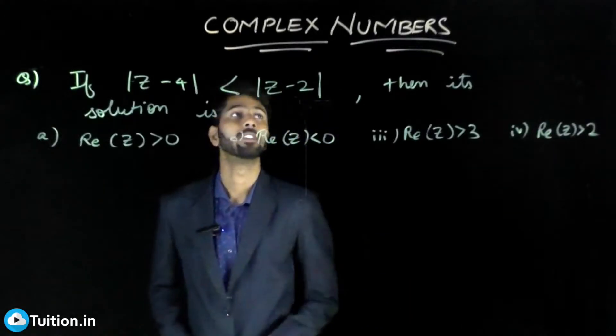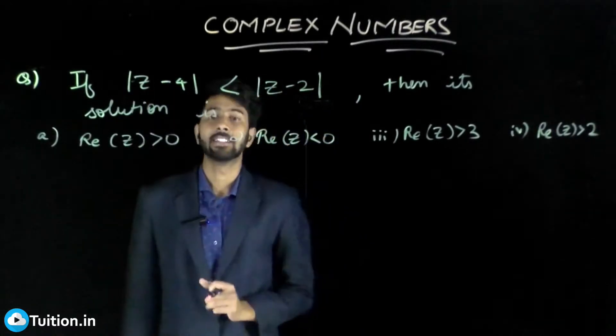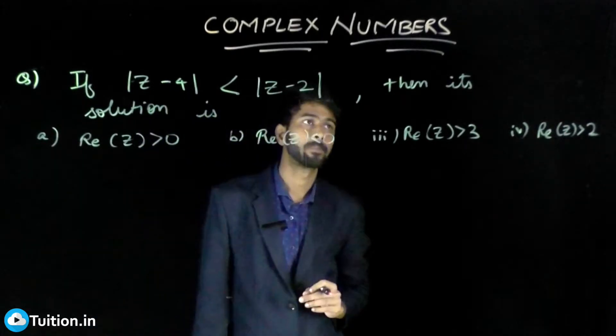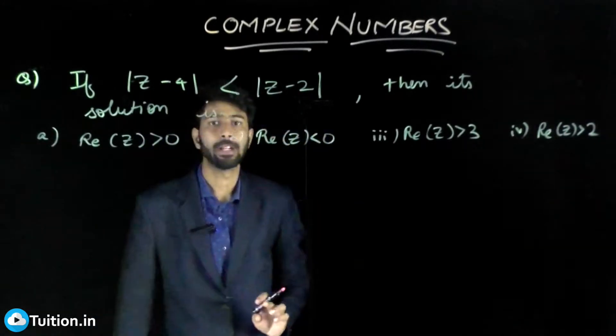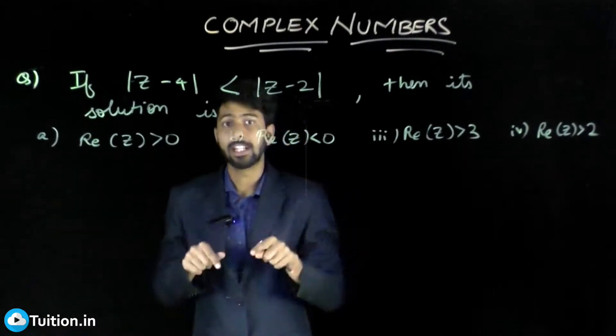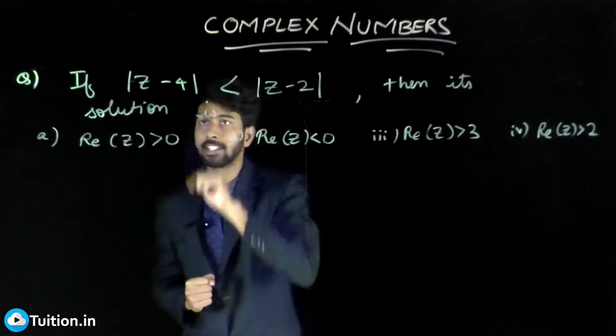Let's look at another problem from the topic of complex numbers. The problem states: if |Z - 4| is less than |Z - 2|, find a solution. They've given a restriction on your complex number, and given that restriction, they want you to find a solution which will satisfy this restriction.